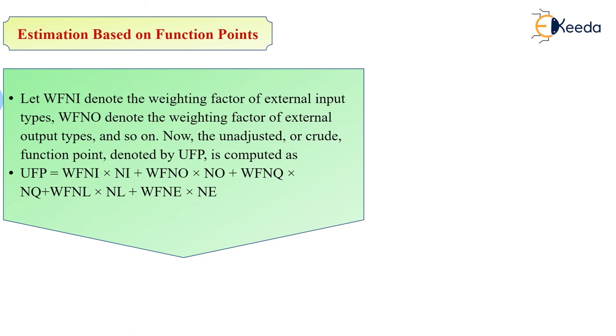For each of the five types of user functions, there is an associated weighting factor. According to the formula, the unadjusted or crude function point, UFP, is defined as the sum of weighted user inputs plus weighted logical files, interface files, etc. You can see the formula written underneath. This formula calculates the unadjusted function point.